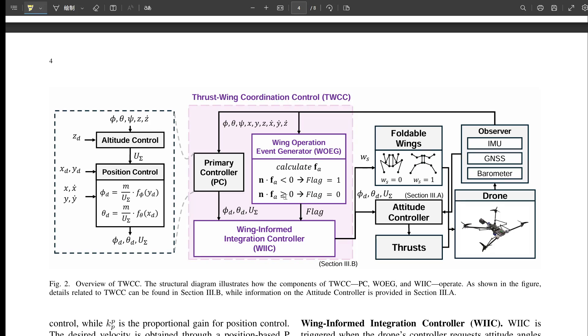Okay. And this leads to something the researchers highlight as a key academic contribution, expanding the drone's controllable acceleration set. Controllable acceleration set. Break that down for us. Sounds important, but a bit abstract. Think of it like this. It's the total range of ways the drone can accelerate, speed up, slow down, change direction. A normal drone is limited by its propellers.